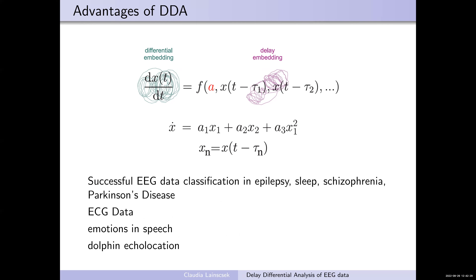I've applied DDA to all kinds of EEG data: epilepsy, sleep, schizophrenia, and Parkinson's data — for Parkinson's I also had movement data on top. I applied it to heart data to distinguish between different heart conditions: normal heart, congestive heart failure, atrial fibrillation. I also applied it to detect emotions in speech and to dolphin echolocation, where dolphins from a submarine base in San Diego had to find different targets.